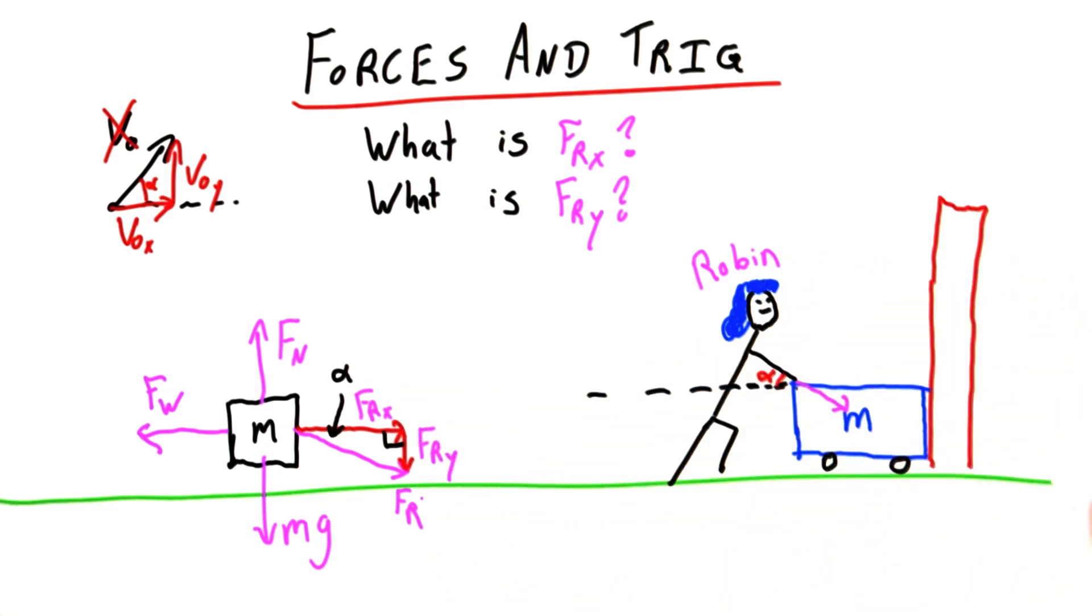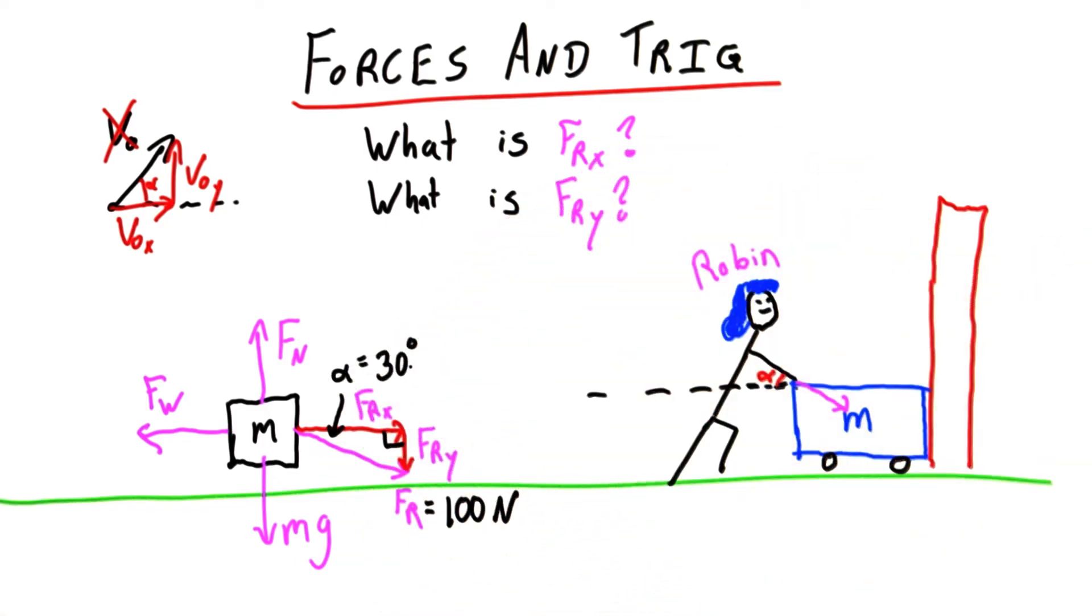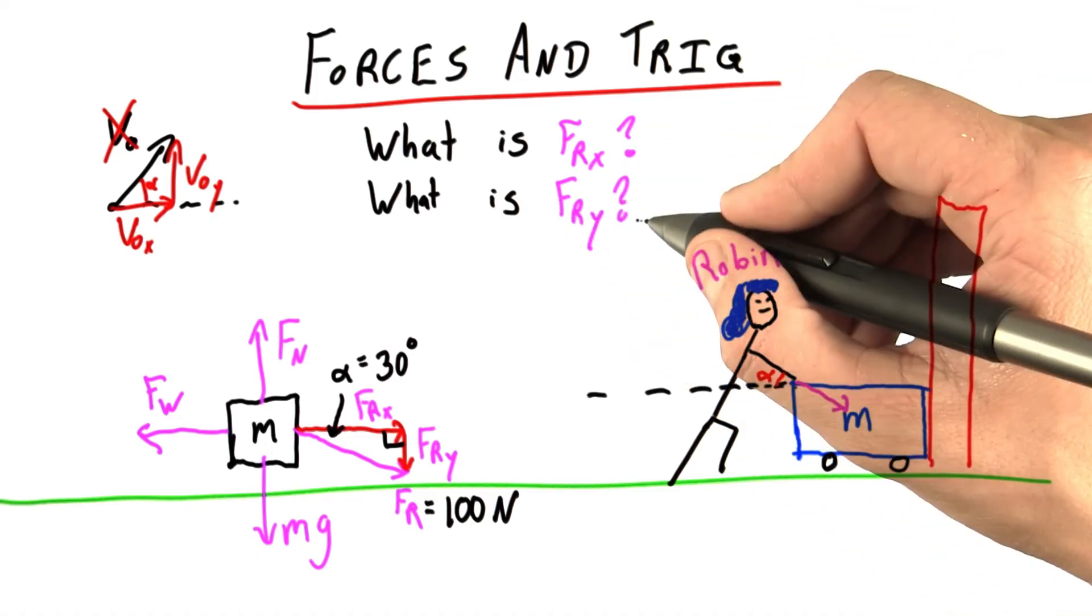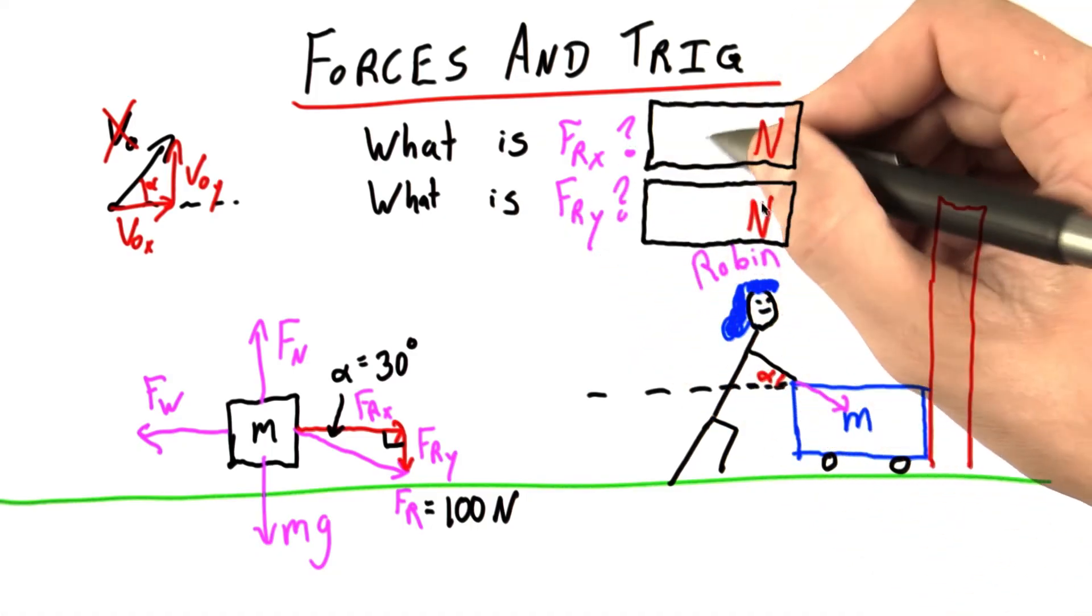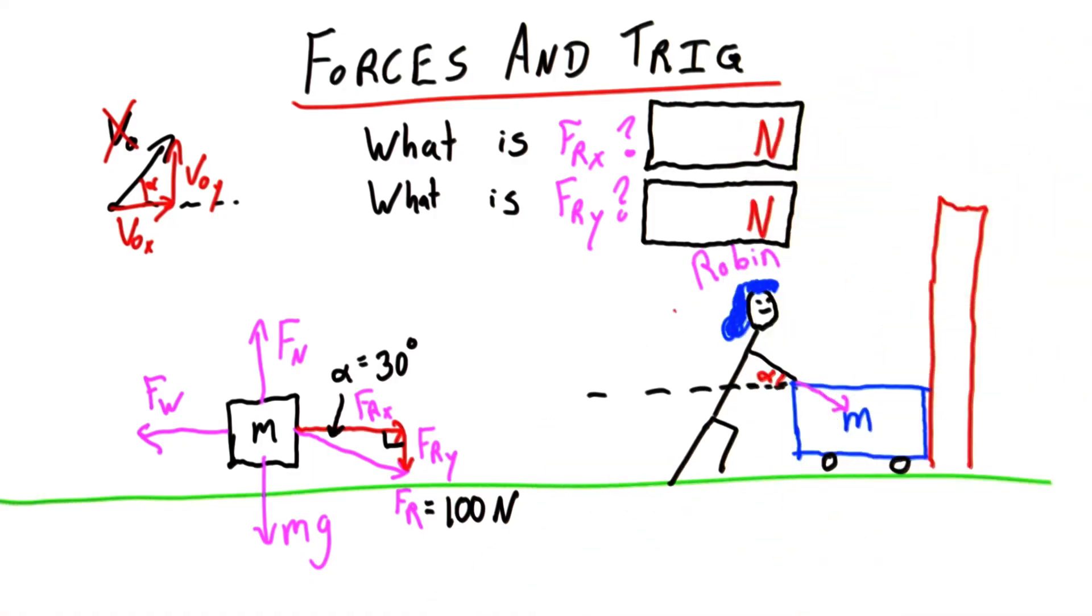Let me give you some numbers so that this is less abstract. Let's say that the force Robin's pushing with is 100 Newtons total, that's fr, and this angle she's pushing at is 30 degrees. Can you use your knowledge of trig to tell me what is frx and what is fry? Enter your answers here and here to one decimal place. I'll be very impressed if you can get this right on your first try.